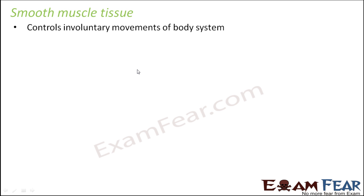Let us look at smooth muscle tissue. These muscle tissues control the involuntary movements of the body — certain movements which take place in our body that are not under our control. We just cannot say stop here or start now. That is not under our will, and that is why these muscles are also known as involuntary muscles.